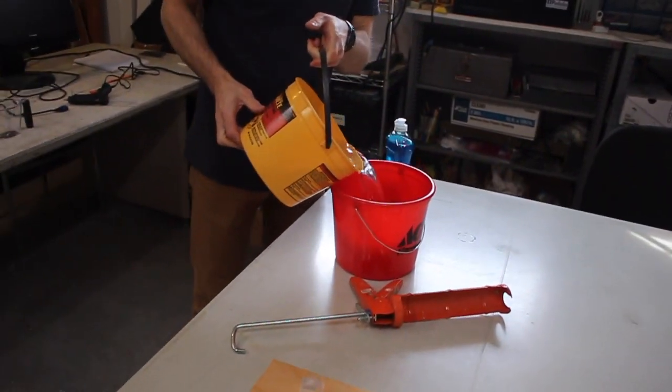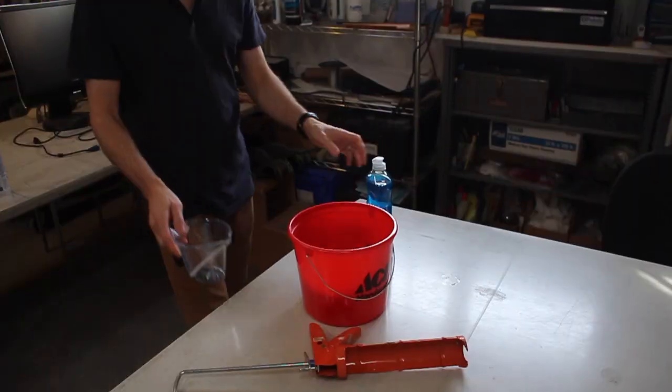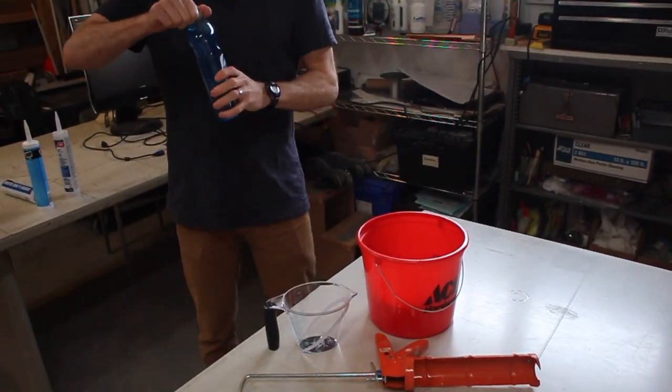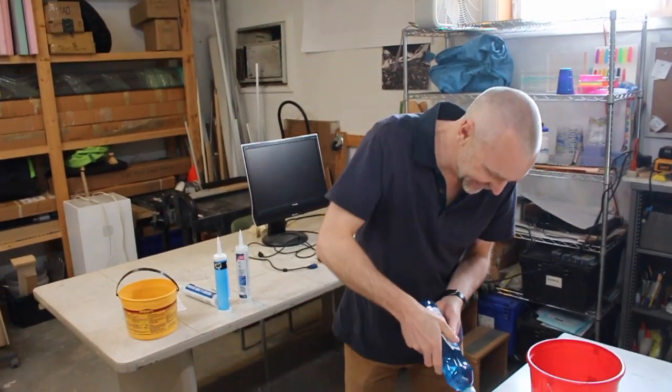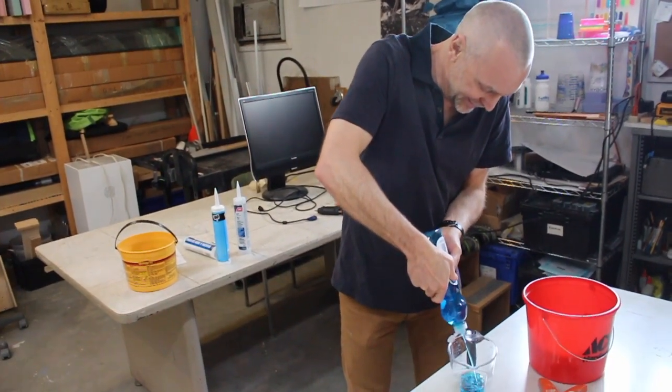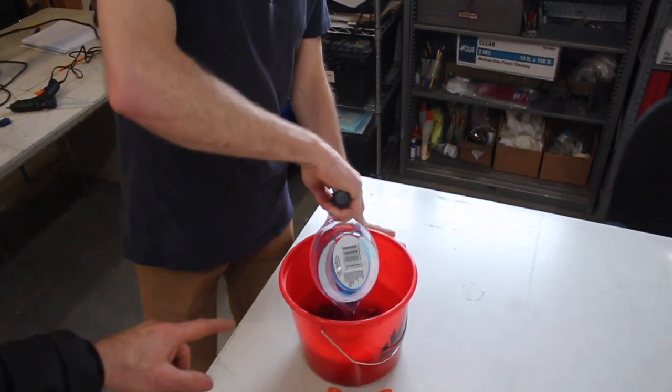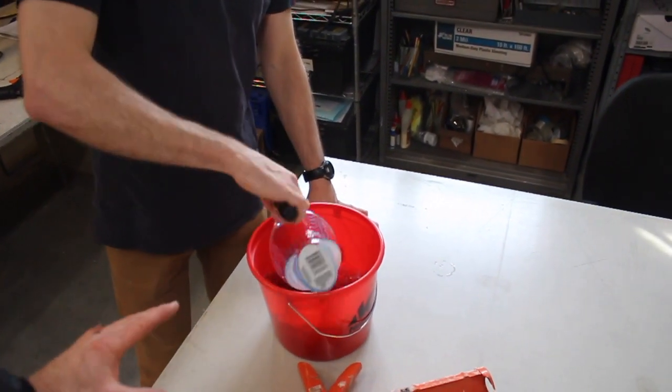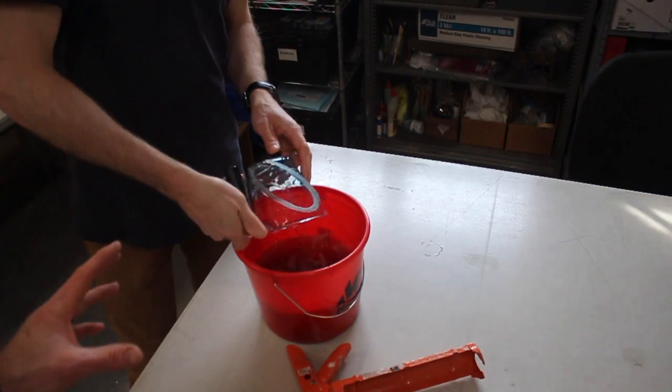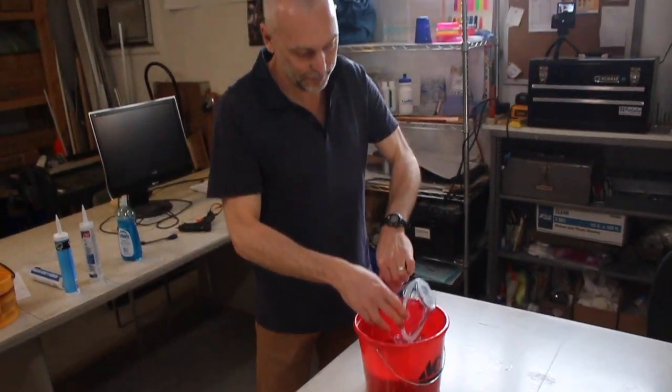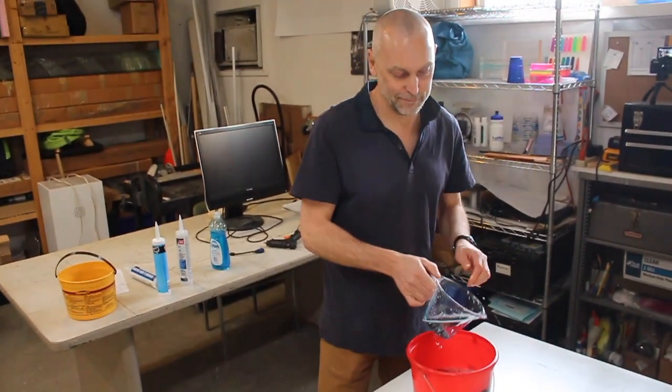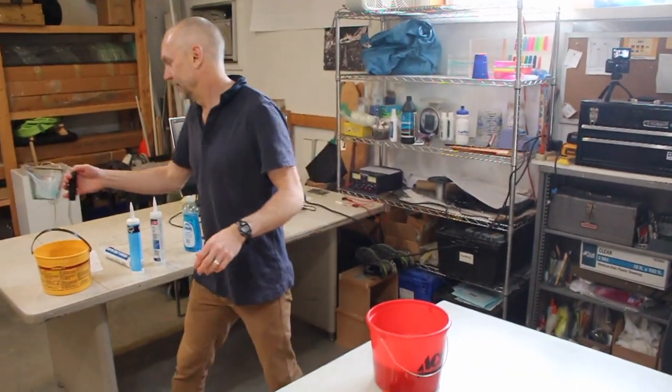Alright, then we're going to put about a half gallon of water in this bucket and then like half a cup of Dawn dish soap. We're not sponsored by Dawn, we wish we were. And the basic idea is that you're creating a super soapy water that your silicone will not mix with. So then you can reach in here and grab the silicone ball and massage it into shape.